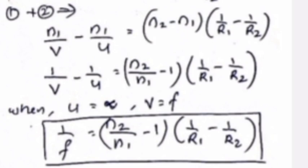When u = ∞, v = f: 1/f = (n2/n1 − 1)(1/R1 − 1/R2).